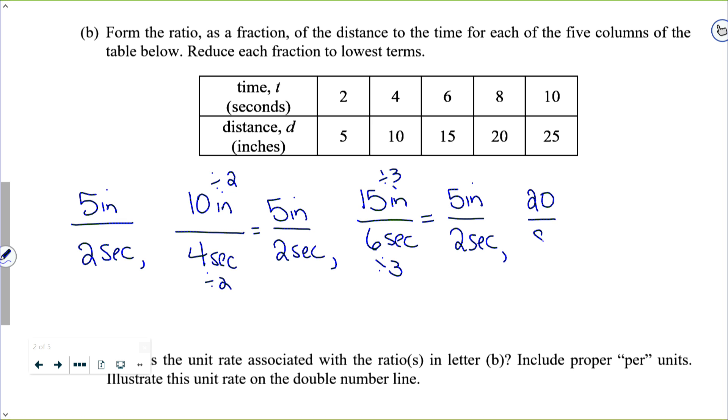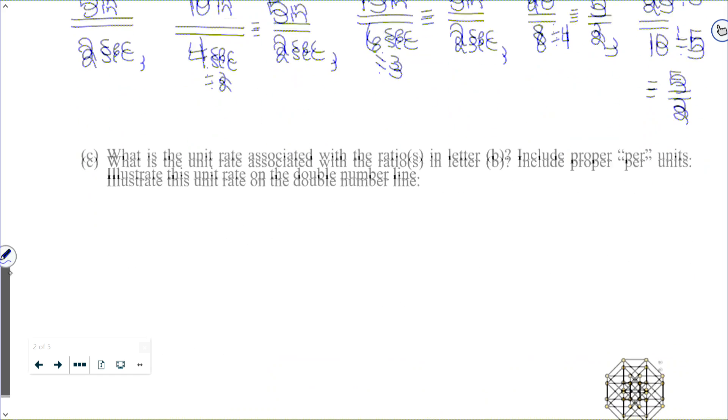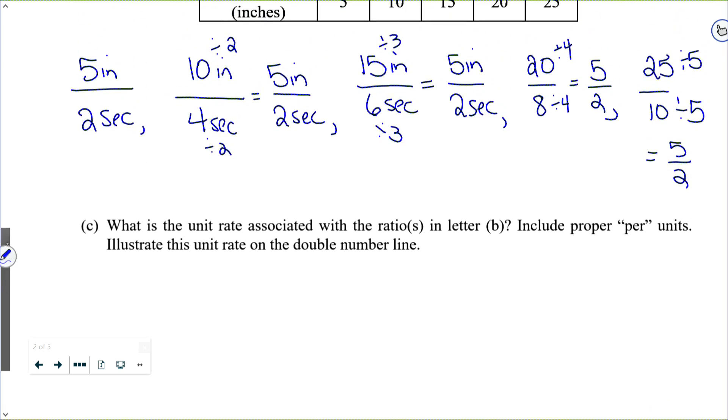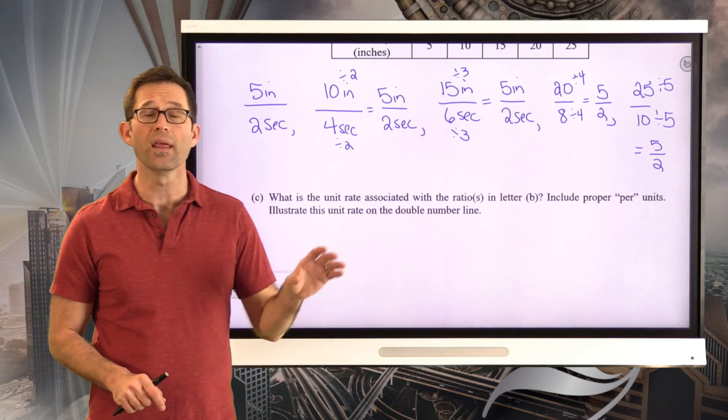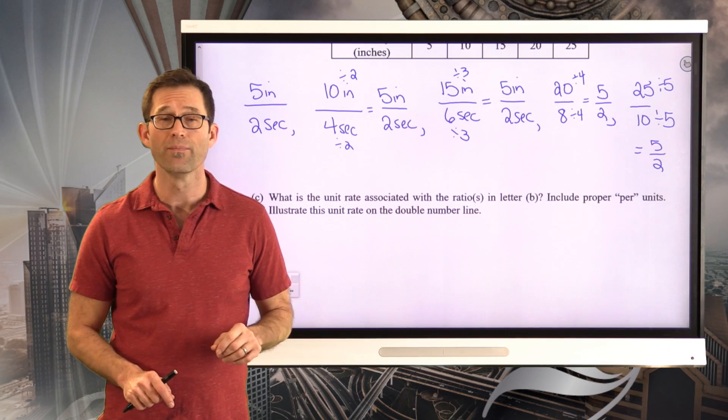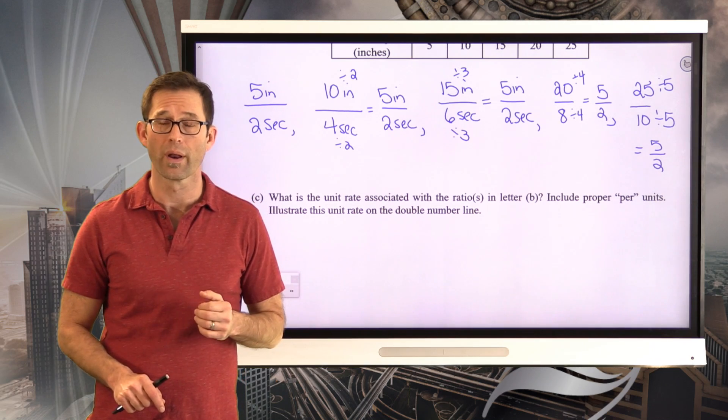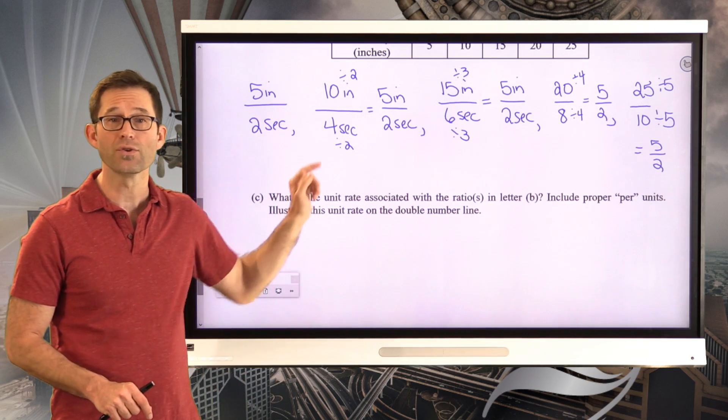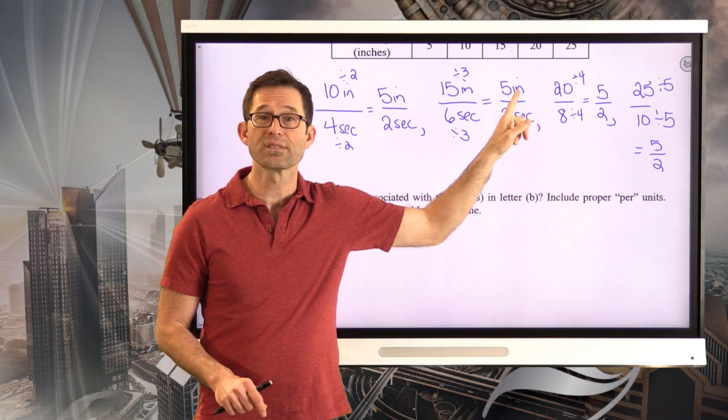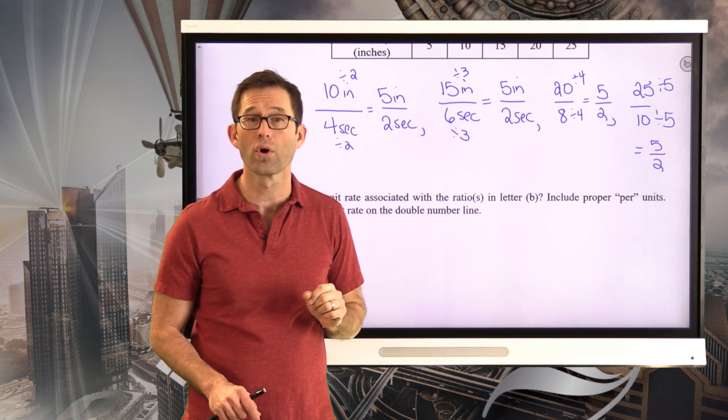And we just keep finding that. When we have the 20 to 8, if we divide by four and divide by four, we end up getting five to two. And the final one, 25 to 10, if we divide by five and divide by five, we get five to two.